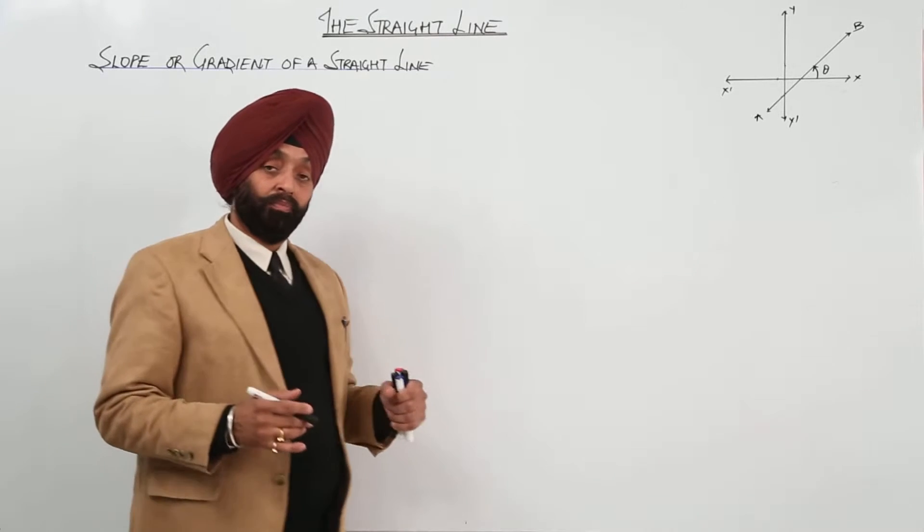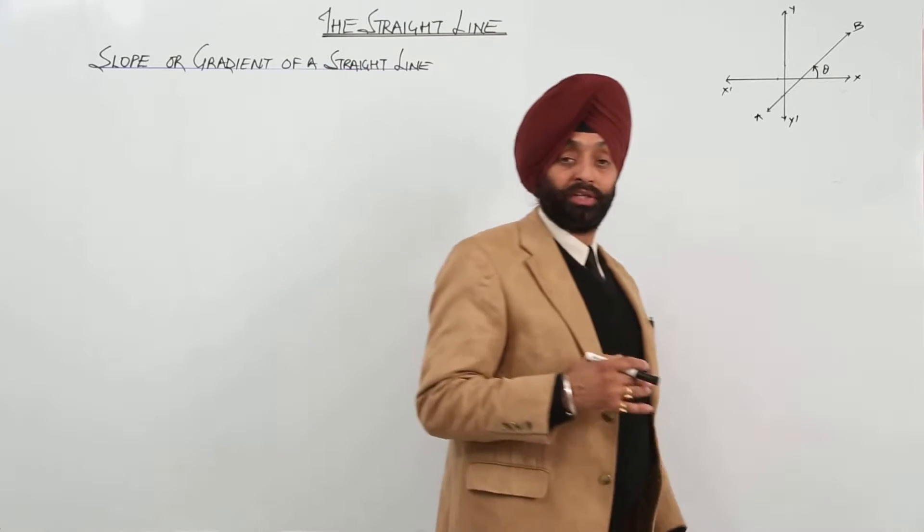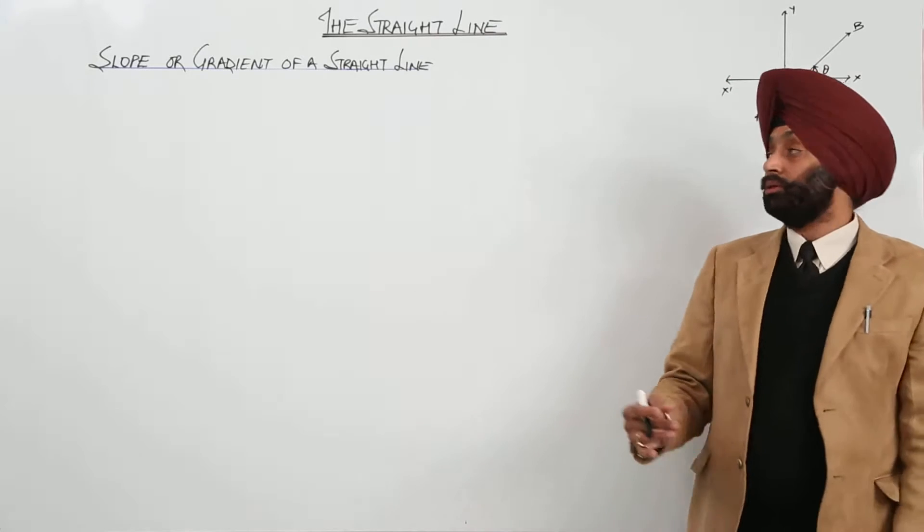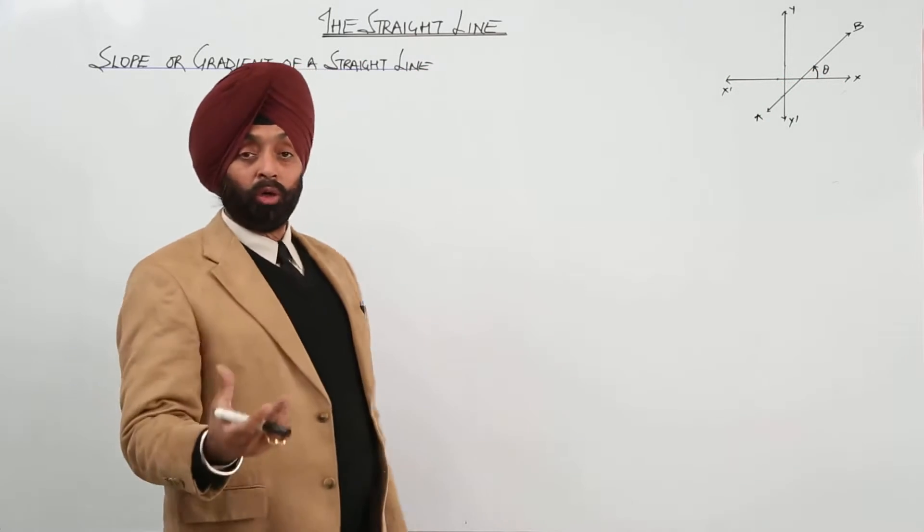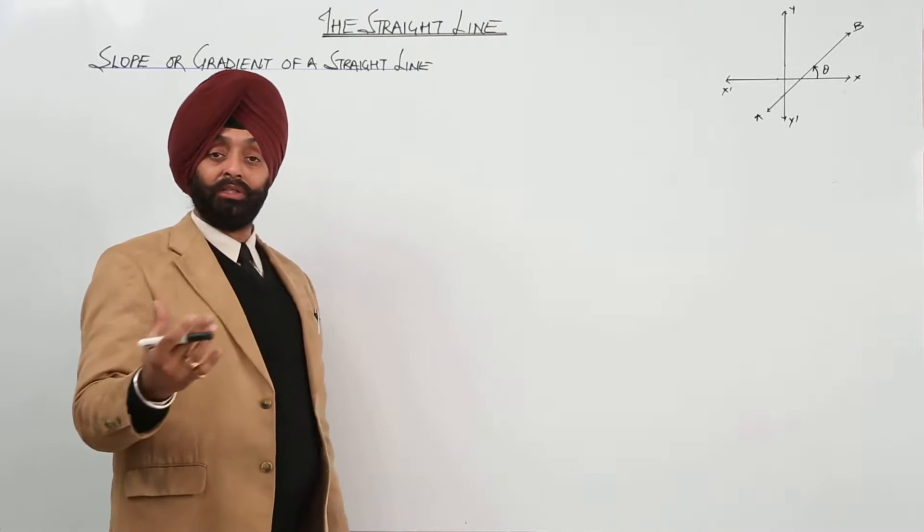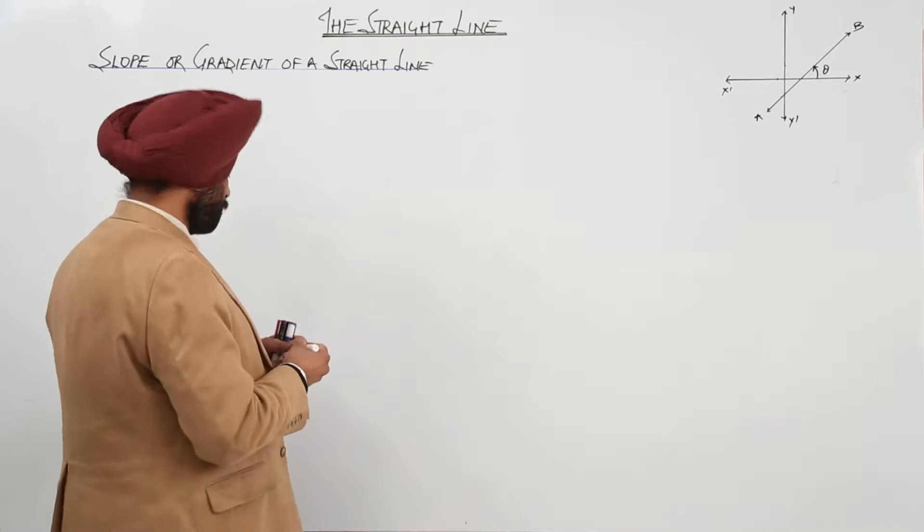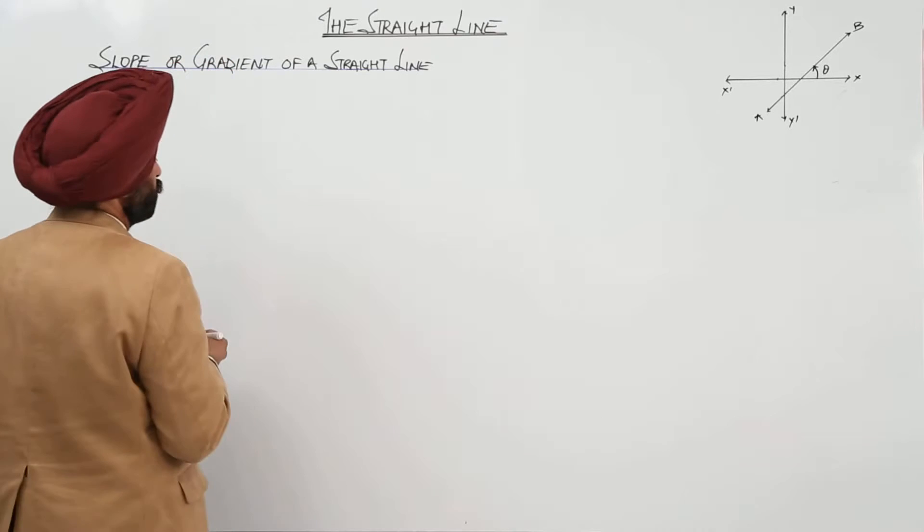Now, starting the main content of the chapter for the straight line, the very first thing is slope or gradient of a straight line. Slope of a straight line basically means angle of a line. So, let's first move for the definition now.